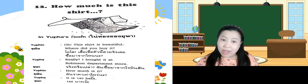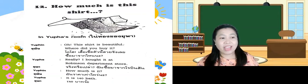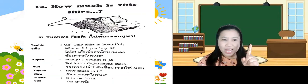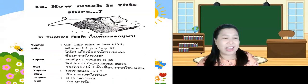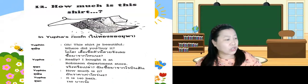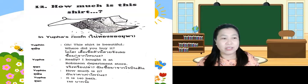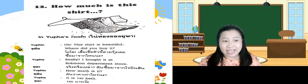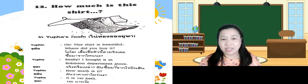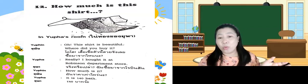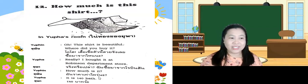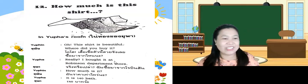How much is it? It is 140 baht. One more time, because you will have a speaking test: 'Oh, this shirt is beautiful! Where did you buy it?' 'Really, I bought it at Robinson Department Store.' 'How much is it?' 'It is 140 baht.' Very good, good job!